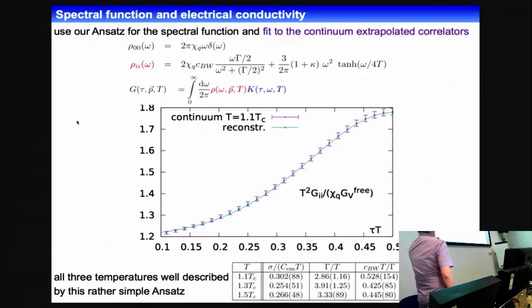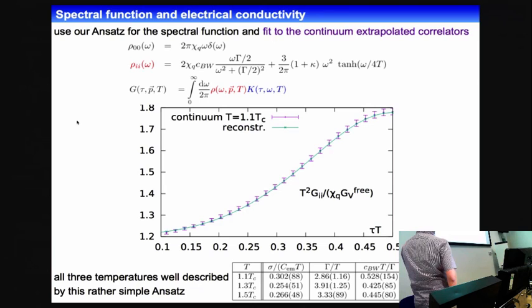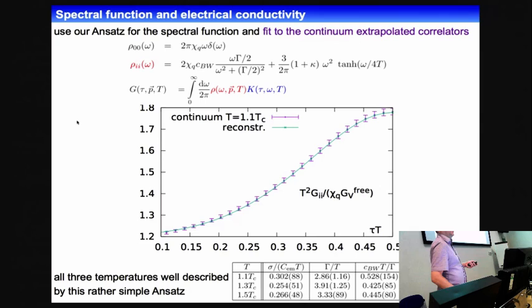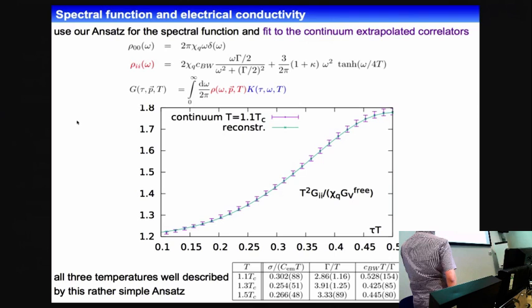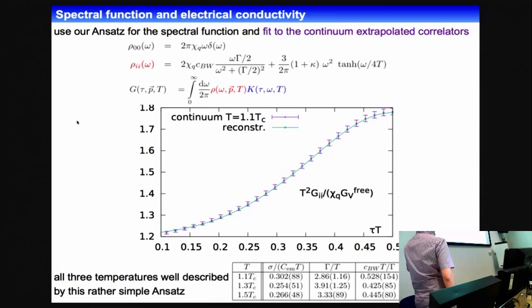We used a simple ansatz for the spectral function containing a transport peak — a Breit-Wigner at the origin — and the leading order perturbative correction for the omega-squared behavior, where in principle you have to include a running coupling in kappa, but for the moment we keep this as a constant. We plug this ansatz into the integral formula, convoluted with a kernel, and fit the continuum extrapolated correlation function. It was very surprising that this simple ansatz already fits the data very well over the whole distance region, with a chi-squared over degrees of freedom around 1.